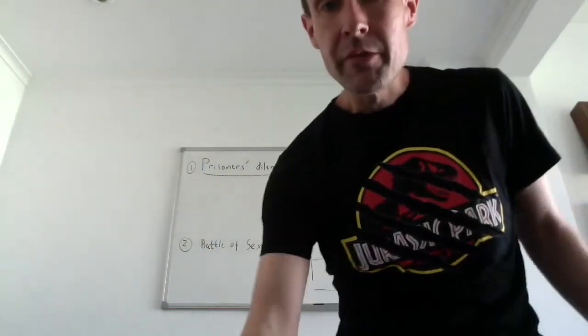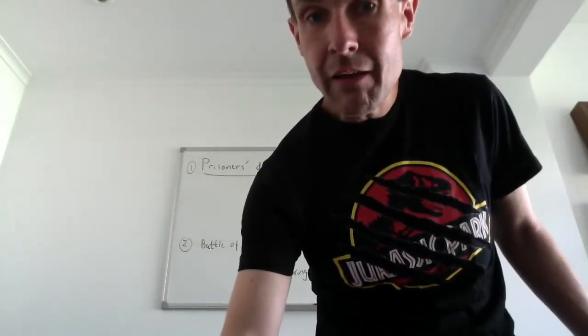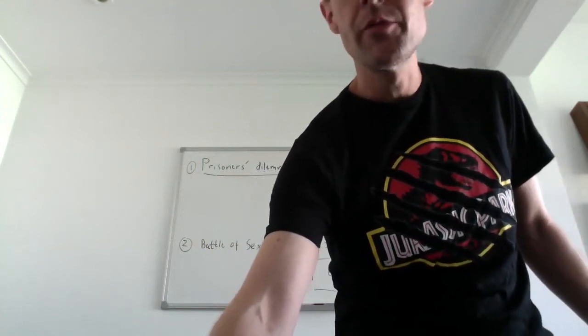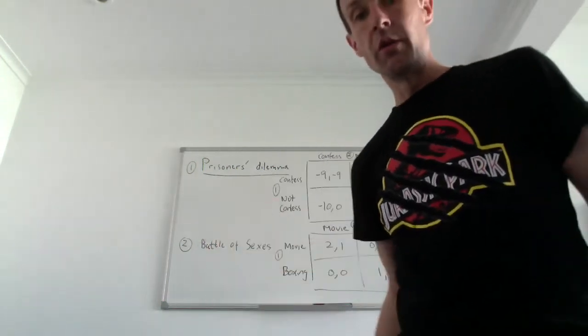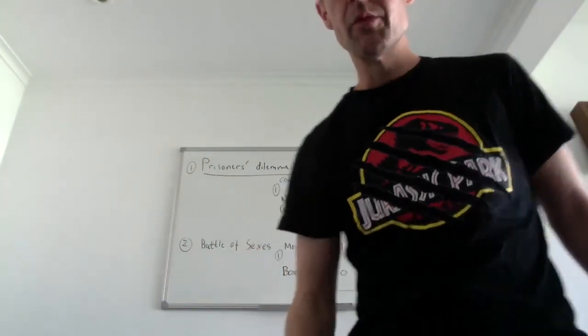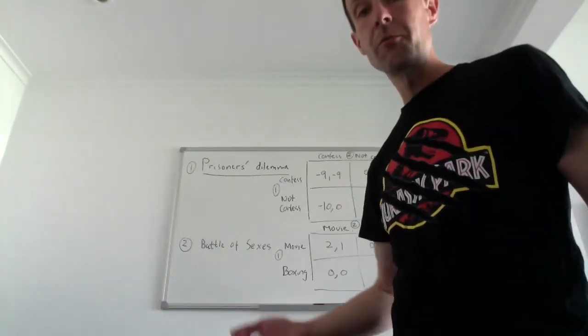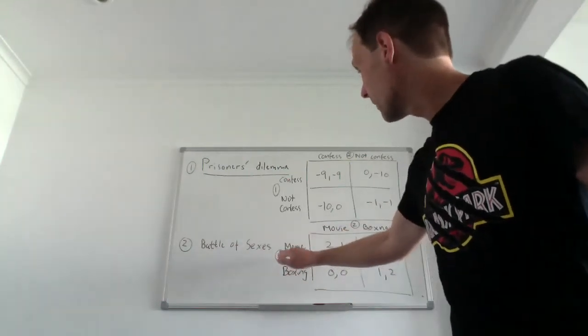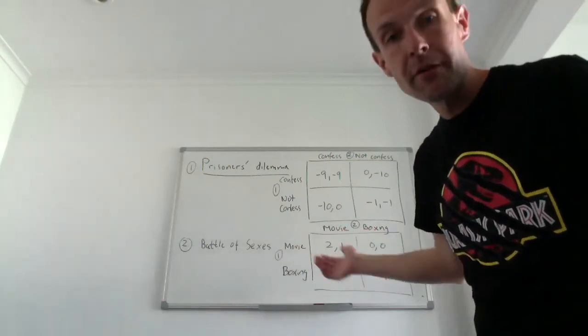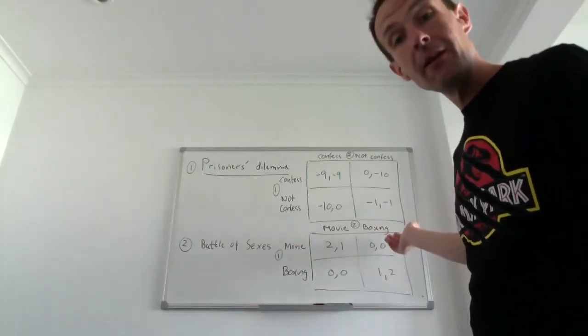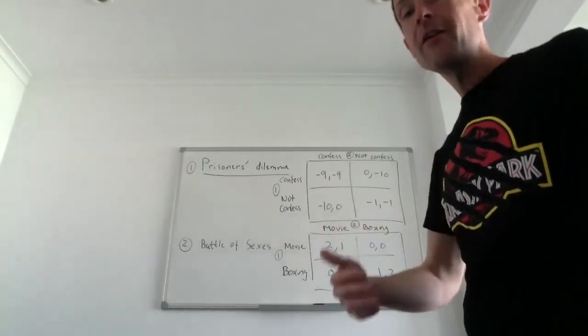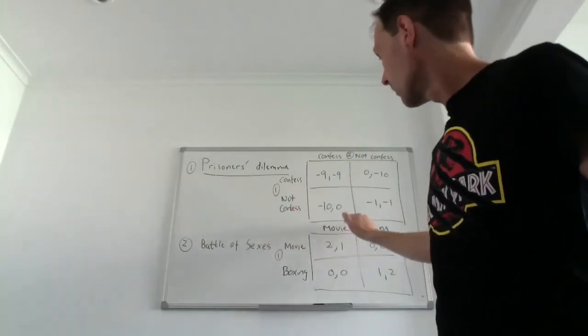So that is game theory as it is. Many examples you can see out there. Google fighting with the European Commission, that's another example. Boeing against Airbus to build a superjet. Boeing could be player one, Airbus could be player two. This would have been profits. What is the best way? Should both of them build the airplane? Should one of them do it? It's dependent on what is the reaction of the other firm.